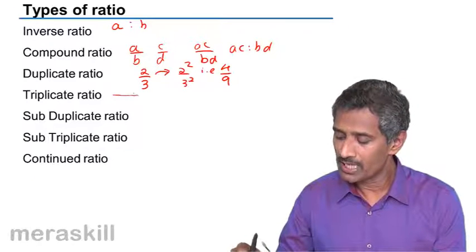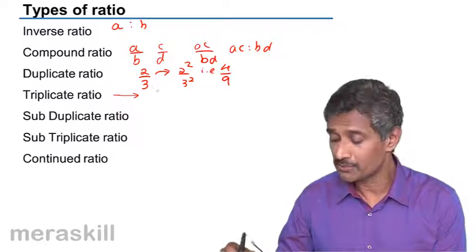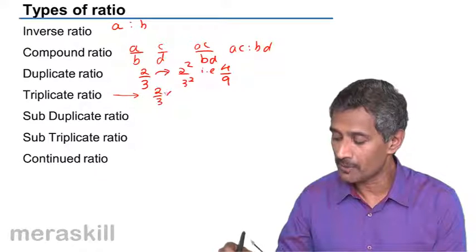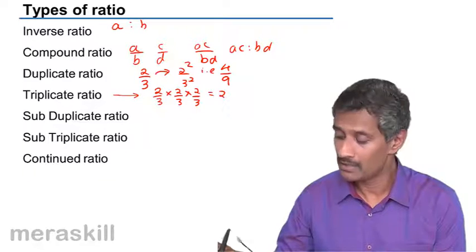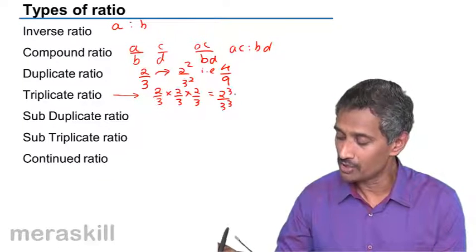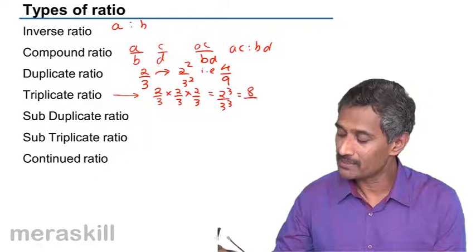Similar to that you have the triplicate ratio. Triplicate ratio is compounding three times, so 2 by 3 into 2 by 3 into 2 by 3. It's basically 2 by 3 cubed, which is going to be 8 by 27.